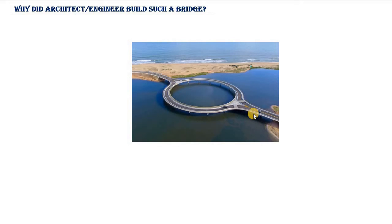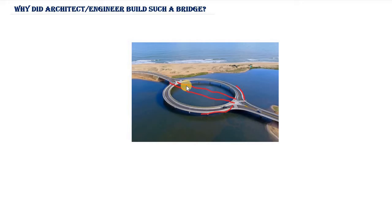I was browsing the internet yesterday and I came across this picture of a bridge that was having a lot of controversy. People were saying why would the engineer or architect design such a bridge — why can't they just make this bridge straight like this? Why would they design something like this?